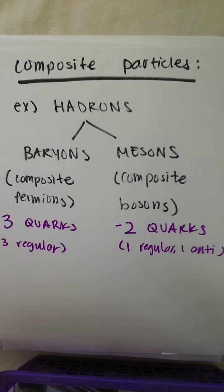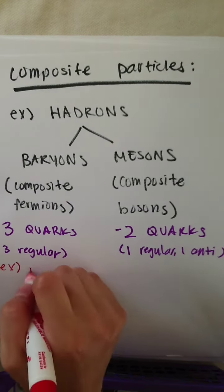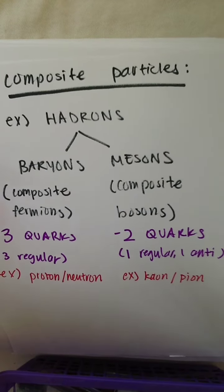Mesons are composite bosons made of one quark and one anti-quark, like the pion and kaon. Mesons are color neutral or have no net color charge, since each meson carries a quark and an anti-quark from the corresponding anti-color to cancel it out, like a red quark and an anti-red anti-quark.